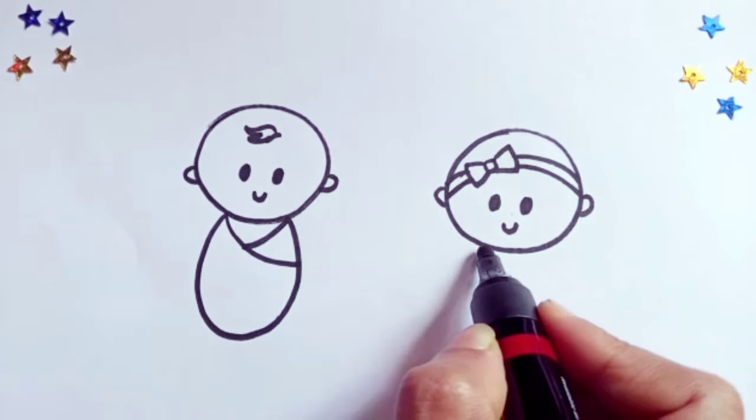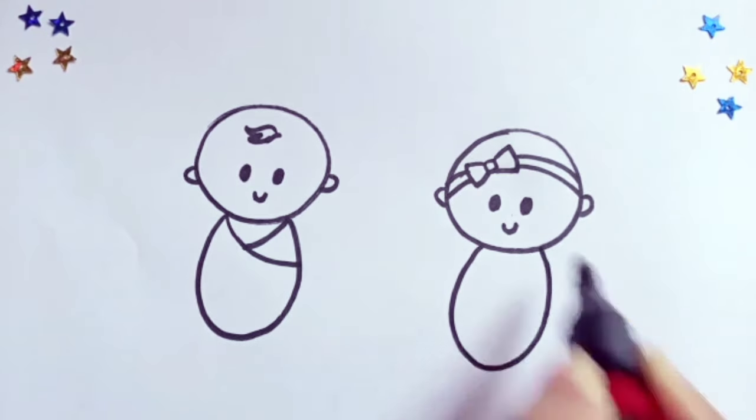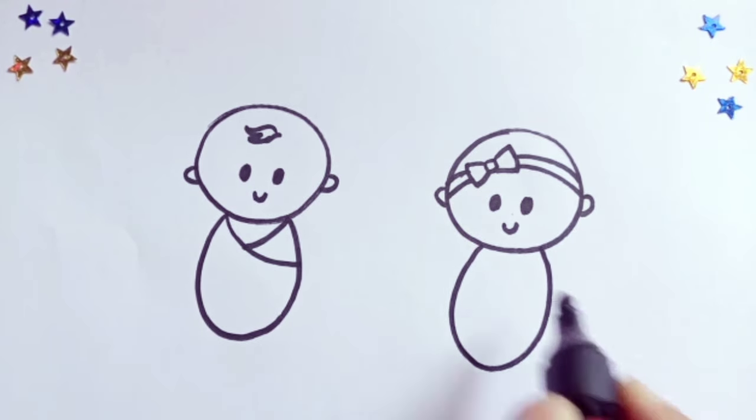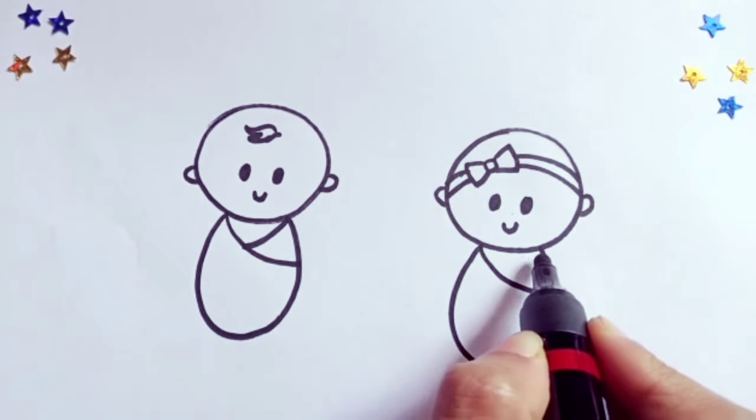Okay, now we'll draw an oval shape and the curved lines just like the baby boy's.